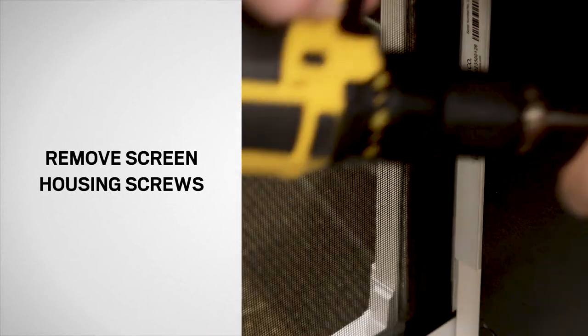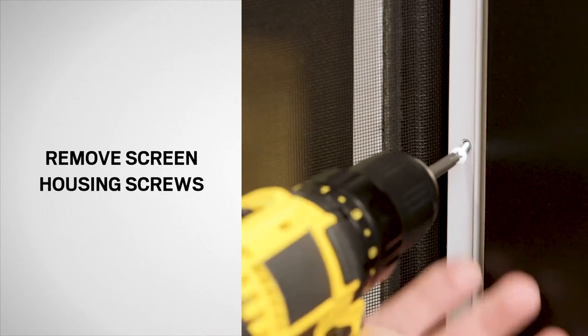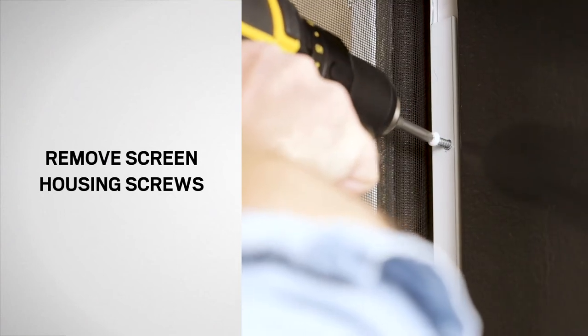Start on the screen housing side. Using a drill with a Phillips bit, remove all screws from the screen housing side and set aside for reuse.